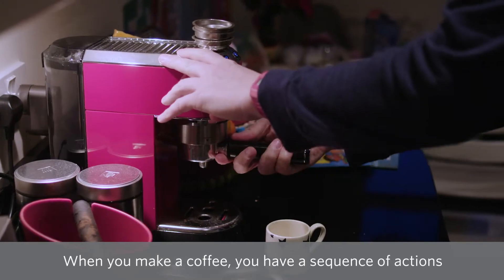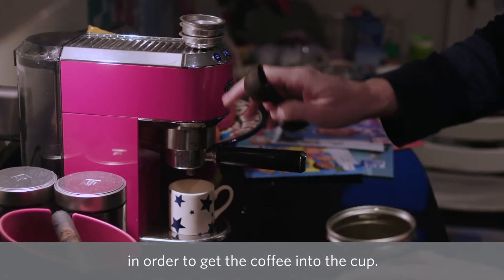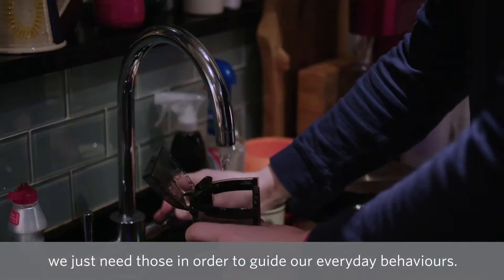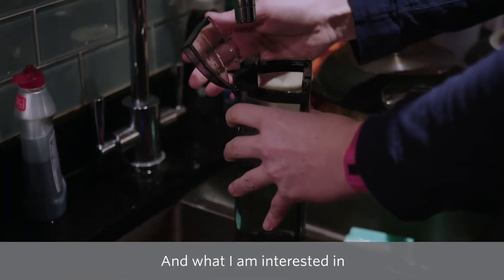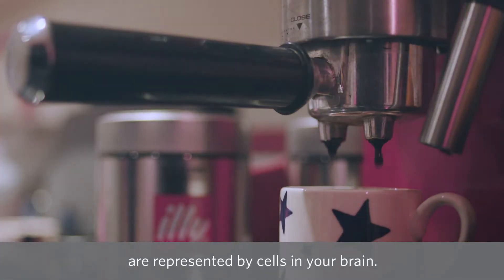When you make a coffee, you have a sequence of actions that you know you have to achieve in order to get the coffee into the cup. Those kinds of models of the causes and outcomes, we just need those in order to guide our everyday behaviors. And what I'm interested in is how those kinds of models of the world are represented by cells in your brain.